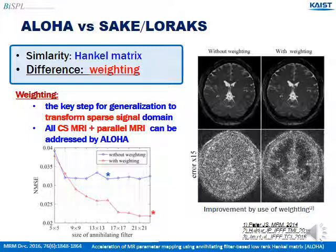Second, the combined compressed sensing and parallel imaging can be addressed by ALOHA very easily. By just stacking the Hankel matrix of each coil side-by-side, we can optimally combine compressed sensing with multi-coil MR imaging. I will explain more about how to implement this concept in the next section.